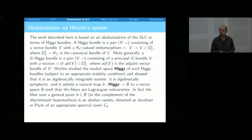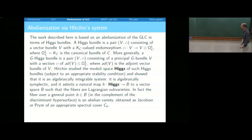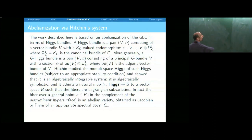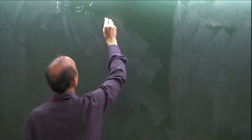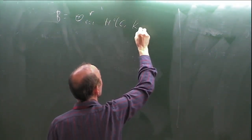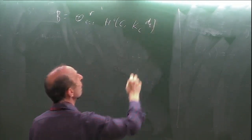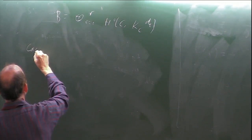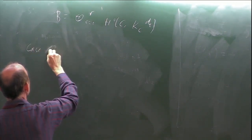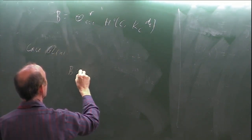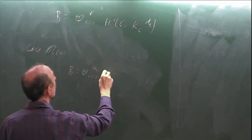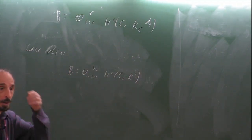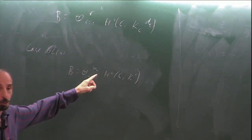B is, let me write what it is in the case of GL_N. It's the direct sum over i from 1 to R — the rank of the group G — of H^0 on the curve C of powers of the canonical bundle. The power is d_i where the d's are the degrees of the elementary symmetric functions. In the case of GL_N, B is the sum from i=1 to N of H^0(C, K^i). The d_i's are just i's in that case, slightly more complicated for other groups. For SL_N you just have the sum from 2 to N.